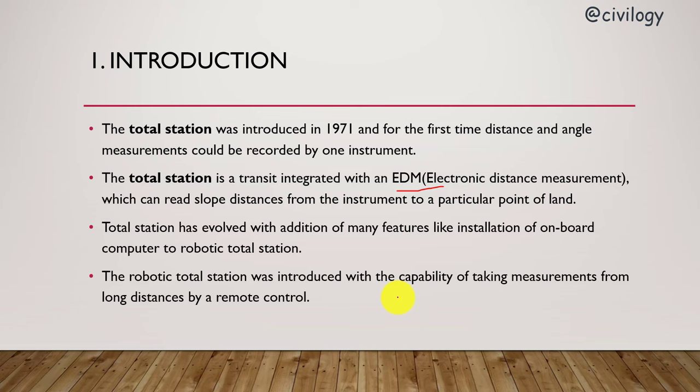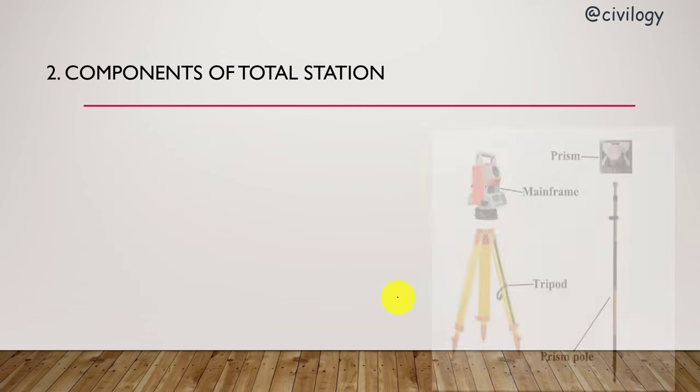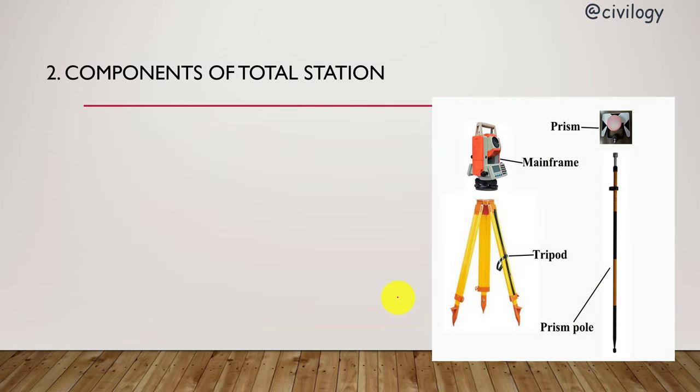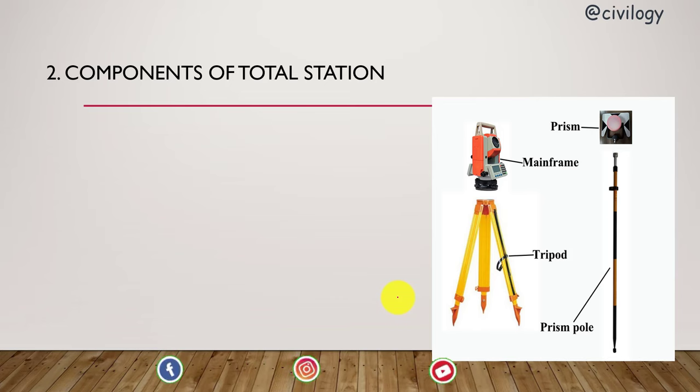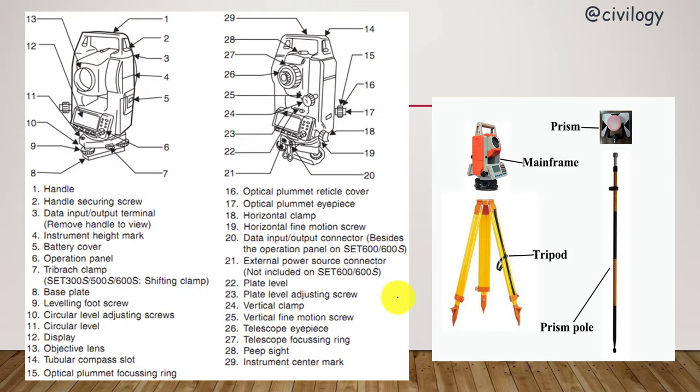Components of total station: The main parts are mainframe, tripod, prism, and prism pole. In the mainframe we have other parts you can see in the picture. Just pause the video and take a look - these are very important for handling the total station.